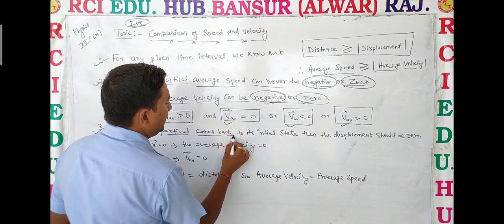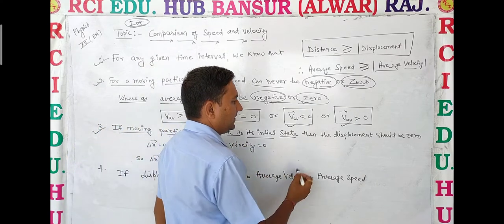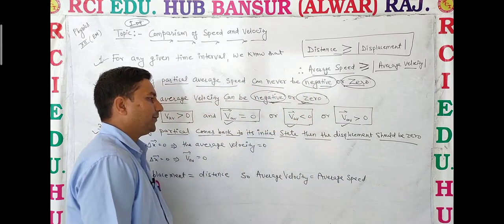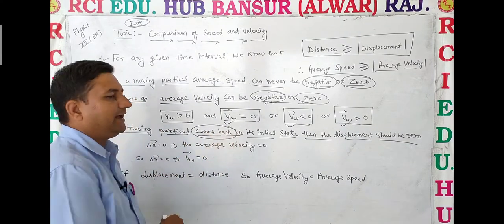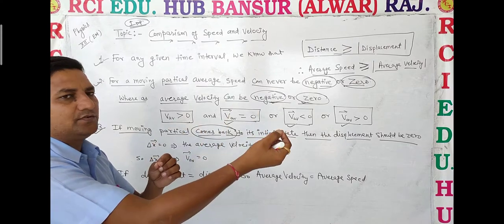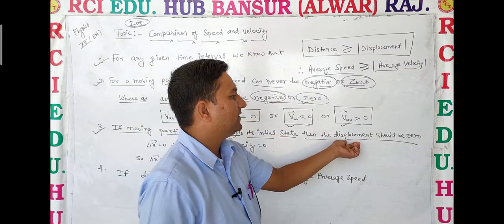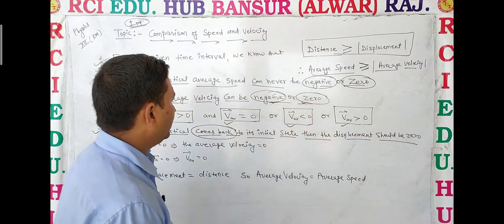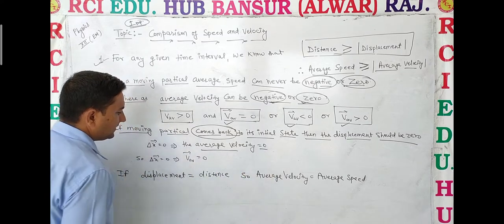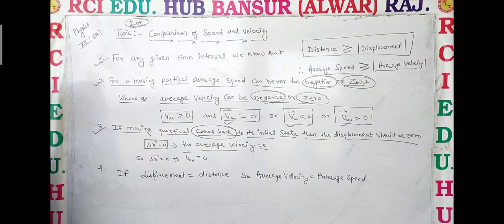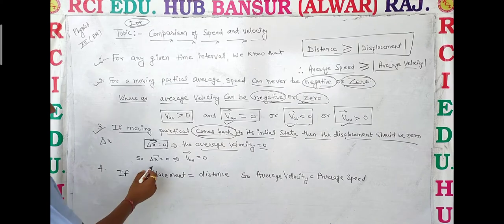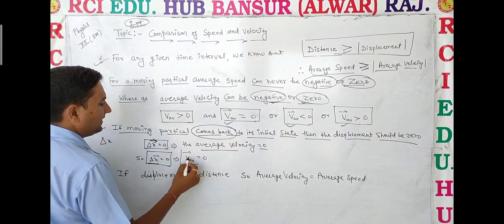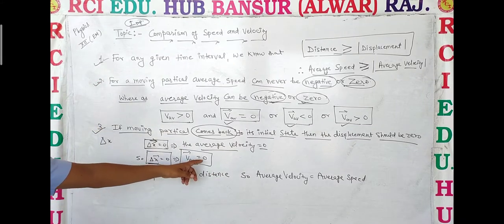Third point: if a moving particle comes back to its initial position, then the displacement is zero. So in this condition, del x equals zero, and therefore the average velocity is also zero.